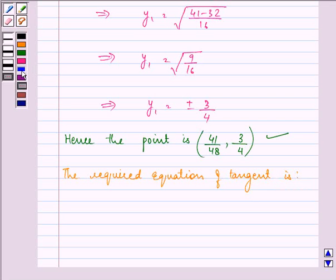y minus y1 which is 3 by 4 equal to slope of the tangent which we found out above as 2, as it was equal to the slope of the line which we found out to be 2, bracket x minus x1 which is 41 by 48. What we need to do is we need to just simplify